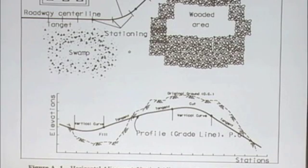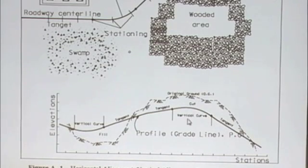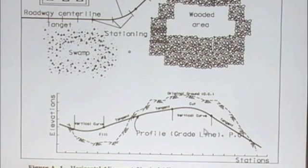This is a plan view, as you look at the building or the roadway from the top. The figure at the bottom is a profile, which is the vertical alignment, and the vertical alignment will show the facility from the side — we call it up and down.